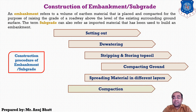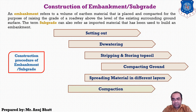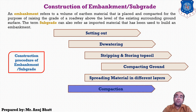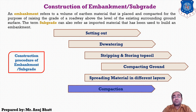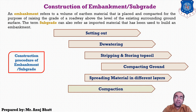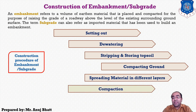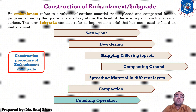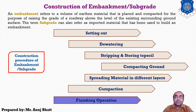Rolling shall be continued until the specified density is achieved. Subsequent layers shall be placed only after the finished layer has been tested and accepted with the required specification. The top level of the embankment shall be checked with reference to the longitudinal and cross profile of the road as per the drawing. Different layers of embankment will be marked on the pillars fixed outside the toe line. After this compaction, the next step is the finishing operation to complete the construction of an individual layer.